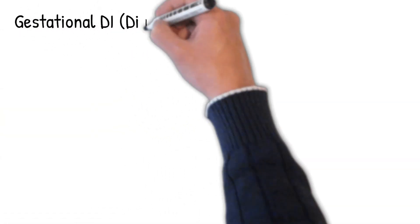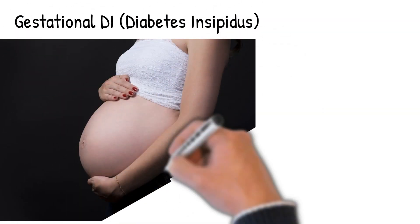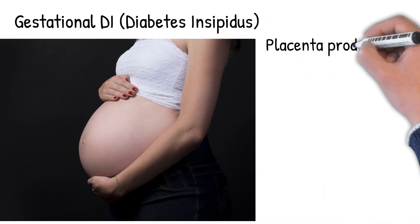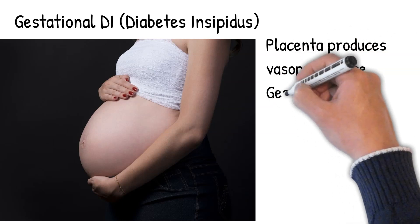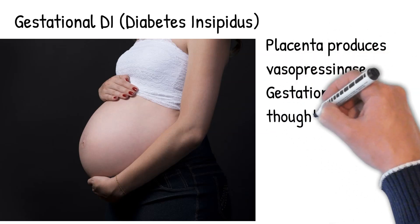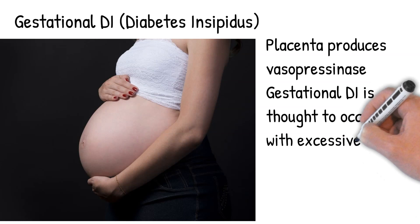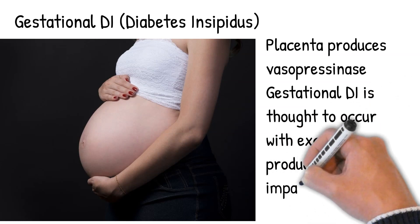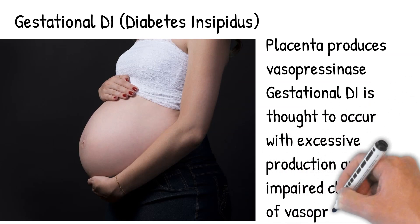Gestational DI occurs only during pregnancy and the postpartum period. During pregnancy, women produce vasopressinase in the placenta, which breaks down antidiuretic hormone (ADH). Gestational DI is thought to occur with excessive production and/or impaired clearance of vasopressinase.